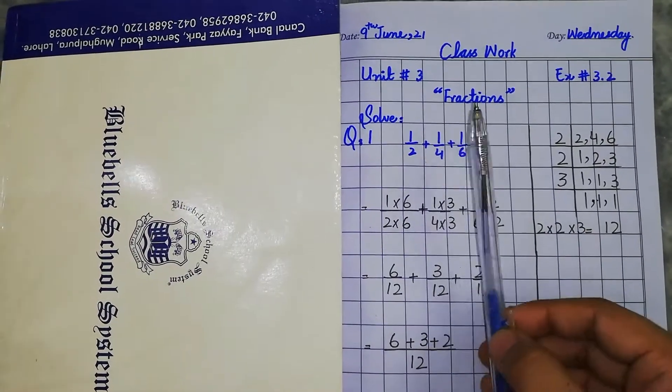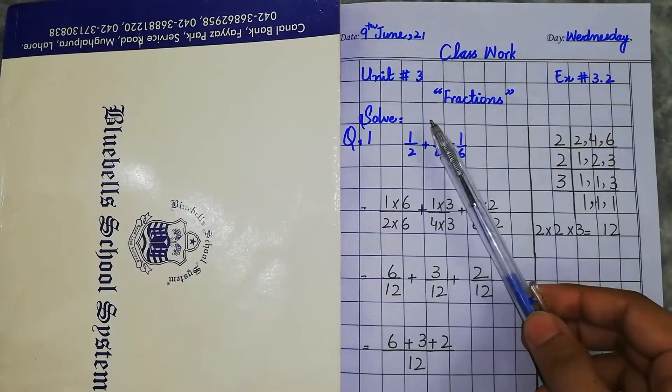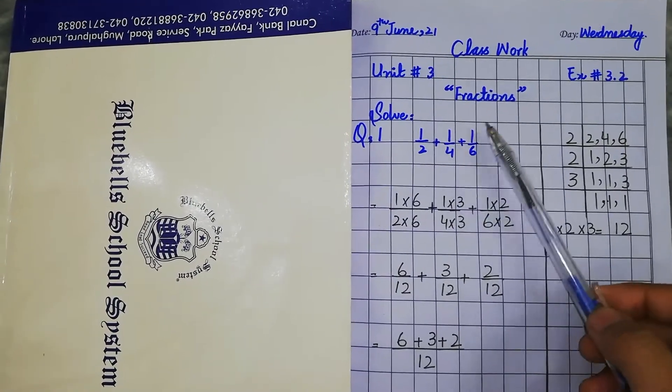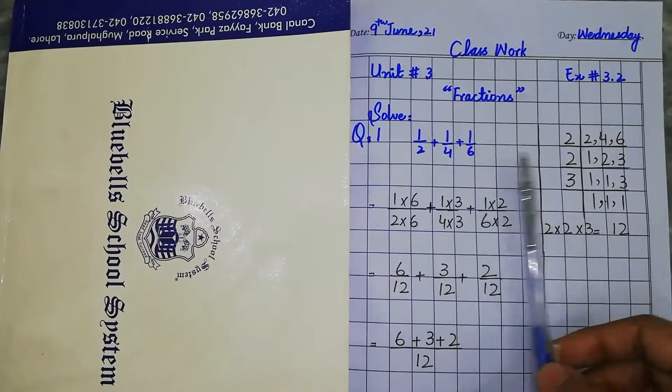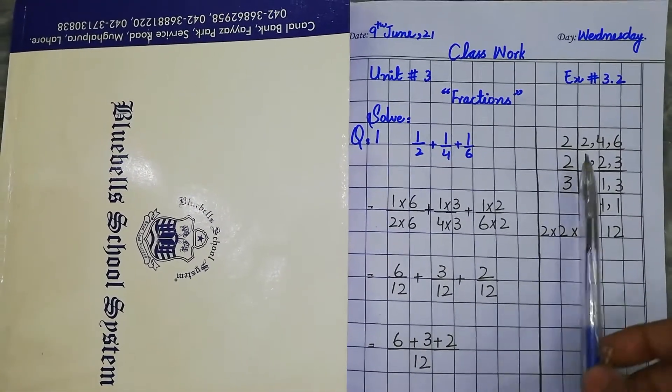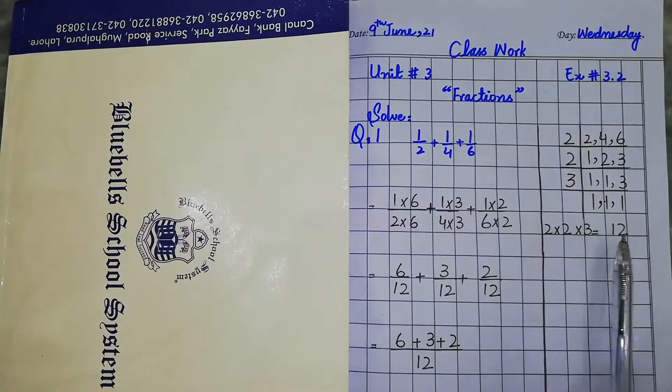Here we have question number 1: 1 over 2 plus 1 over 4 plus 1 over 6. For denominators 2, 4, and 6, we will find the LCM. The LCM is 12.